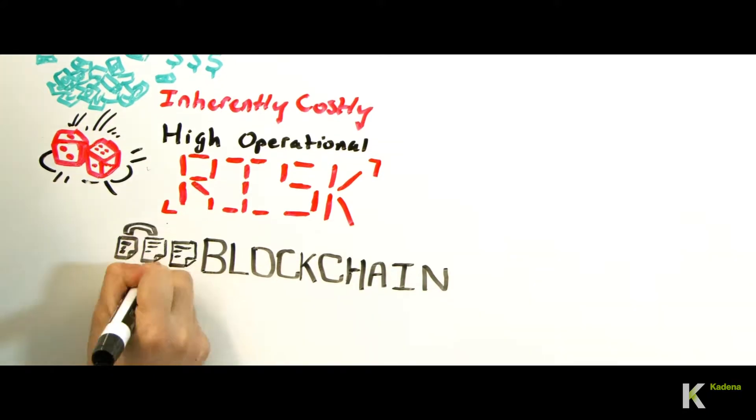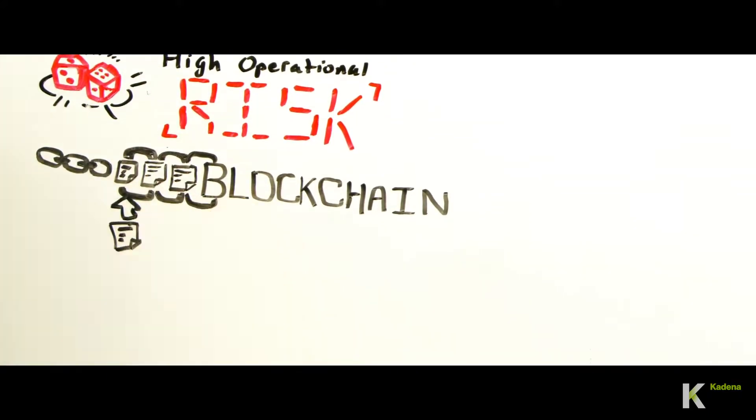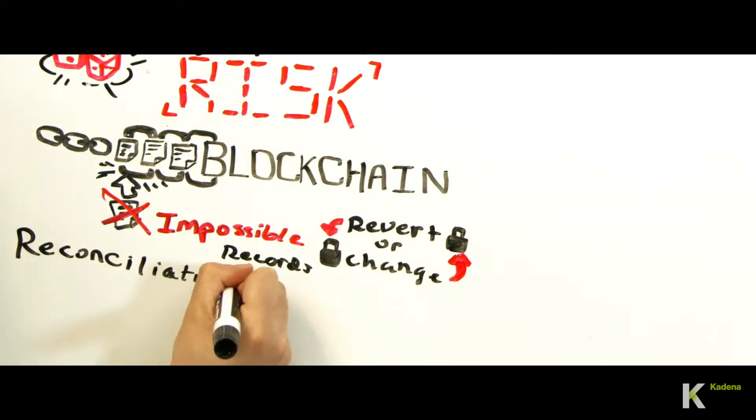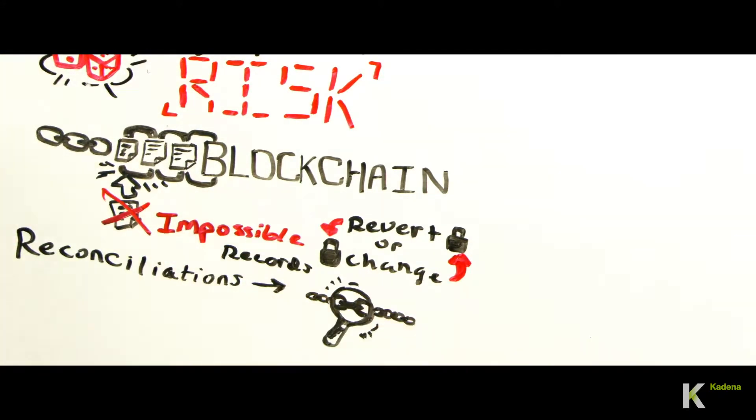Blockchain makes it impossible to revert or change historical records, ensuring an immutable and indelible record is viewed by counterparties, significantly reducing the need for reconciliation or other back-office processes.